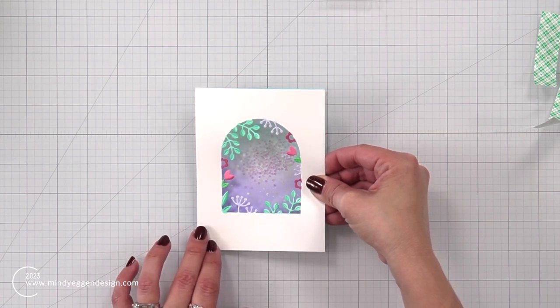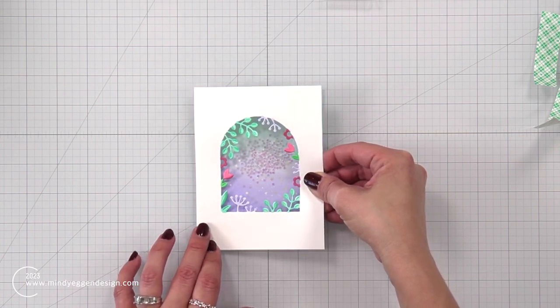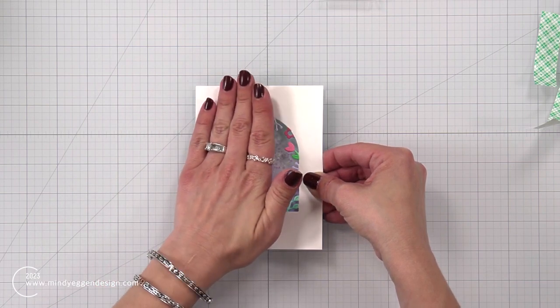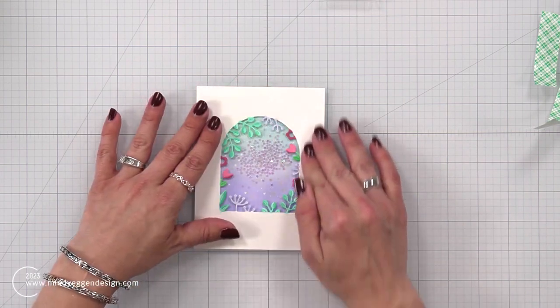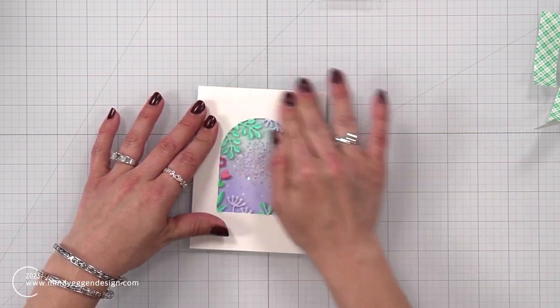So once I remove the backing of the foam tape, I always start in my bottom left-hand corner and work my way across the card. And then just push that foam tape down so it's secured onto the background.